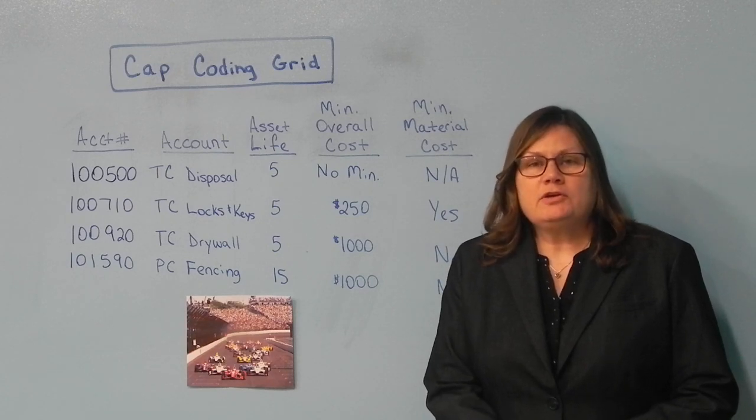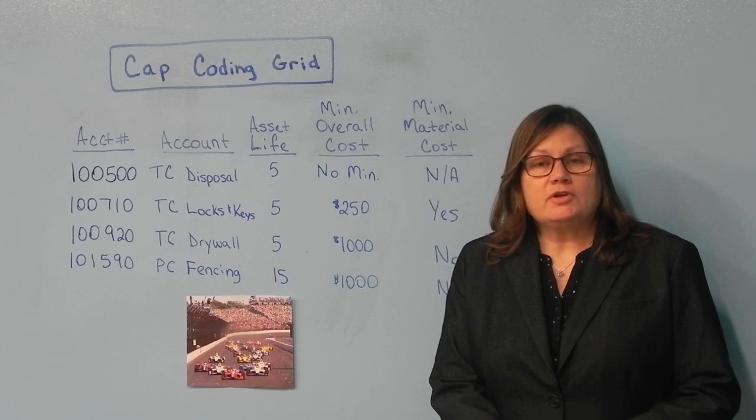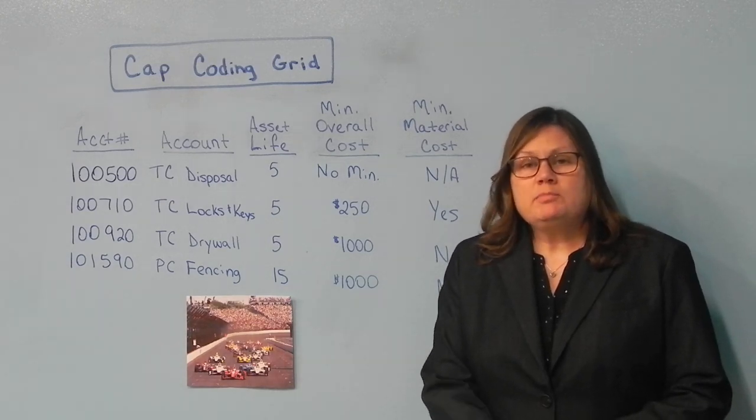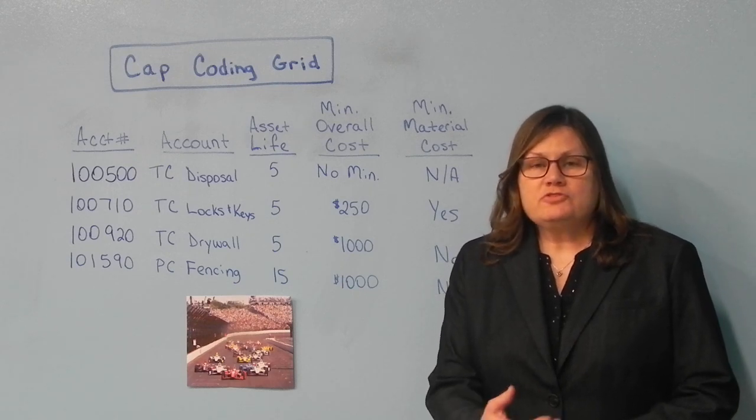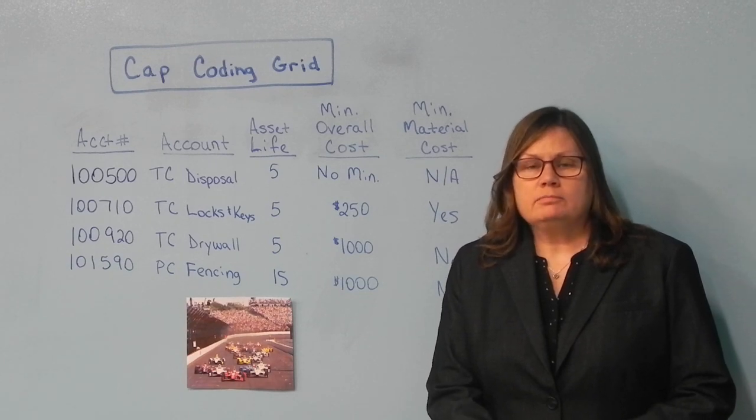Your next criteria would be your minimum material cost. Again, as with overall cost, some don't require any minimum cost at all. An example of that would be your windows. If you purchase a window for $100, as long as the overall cost is more than $250, it can be capital.